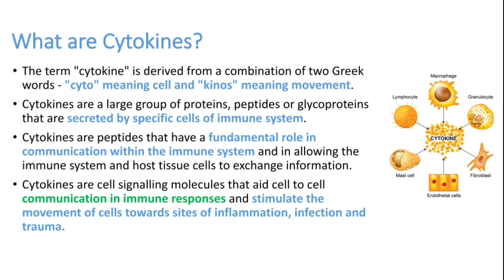Let's see what a cytokine is. 'Cyto' means cell, 'kine' means movement. Cytokines are a large group of proteins, peptides, or glycoproteins secreted by specific cells of the immune system. Any type of cell can secrete cytokines. They have a fundamental role in communication within the immune system — their main role is communication. They communicate that a bacteria or virus has entered our system and that we have to attack it. If there is a problem in this communication, there will be a dysregulated immune response.